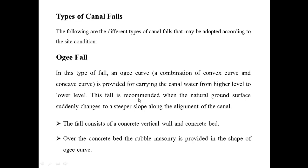Next are the types of canal falls. The following are the different types of canal falls that may be adopted according to the site conditions. The first type is the ogee fall. In this type of fall, an ogee curve — a combination of a convex curve and a concave curve — is provided for carrying the canal water from a higher level to a lower level. This fall is recommended when the natural ground surface suddenly changes to a steeper slope along the alignment of the canal.